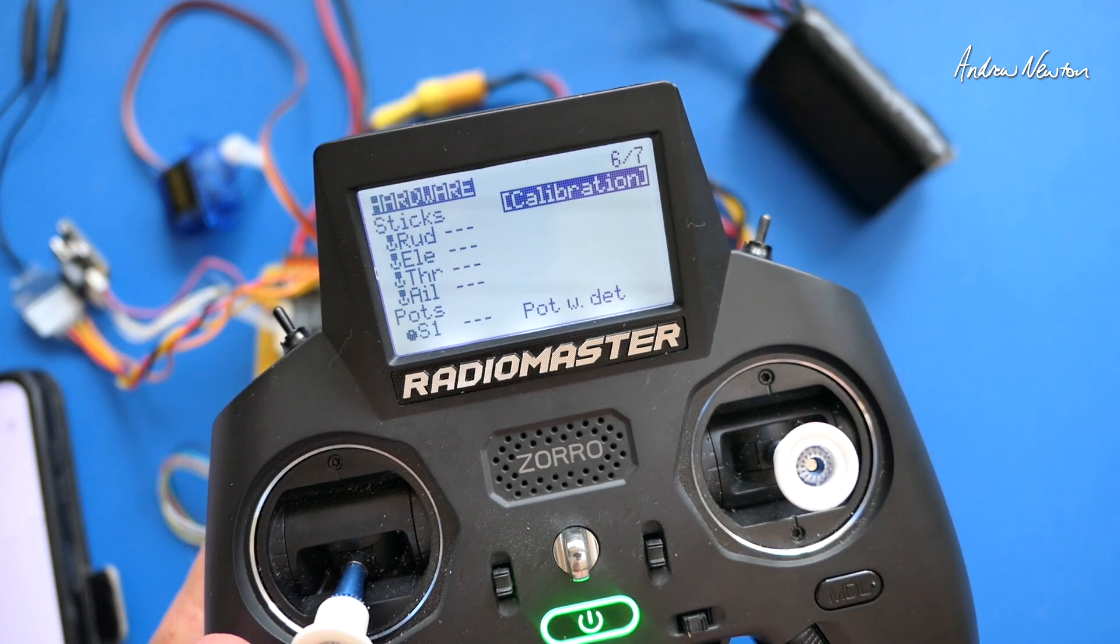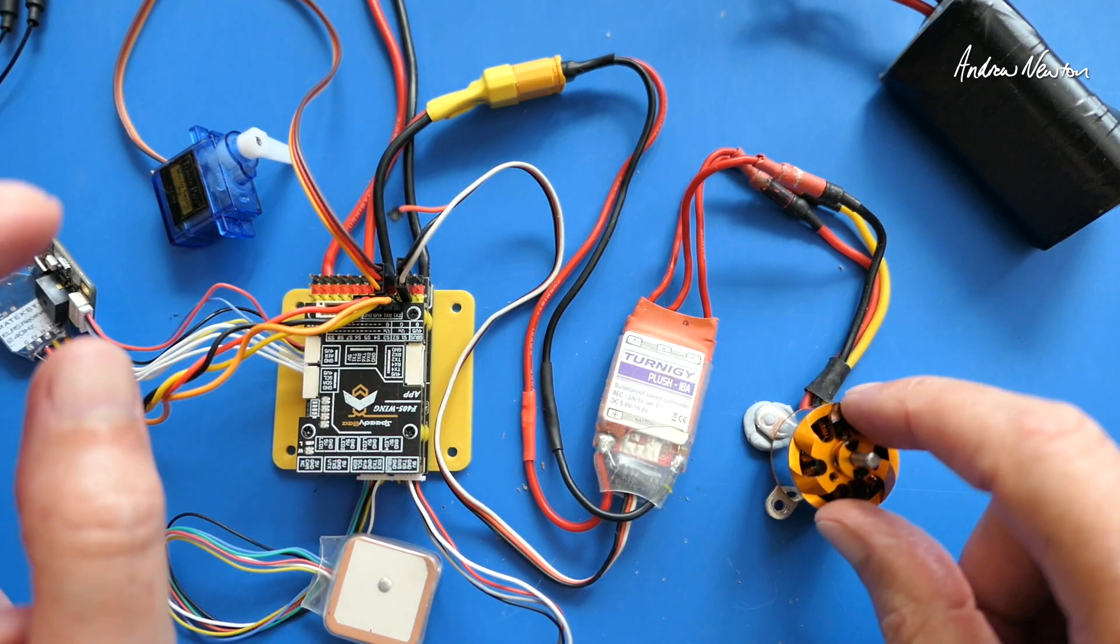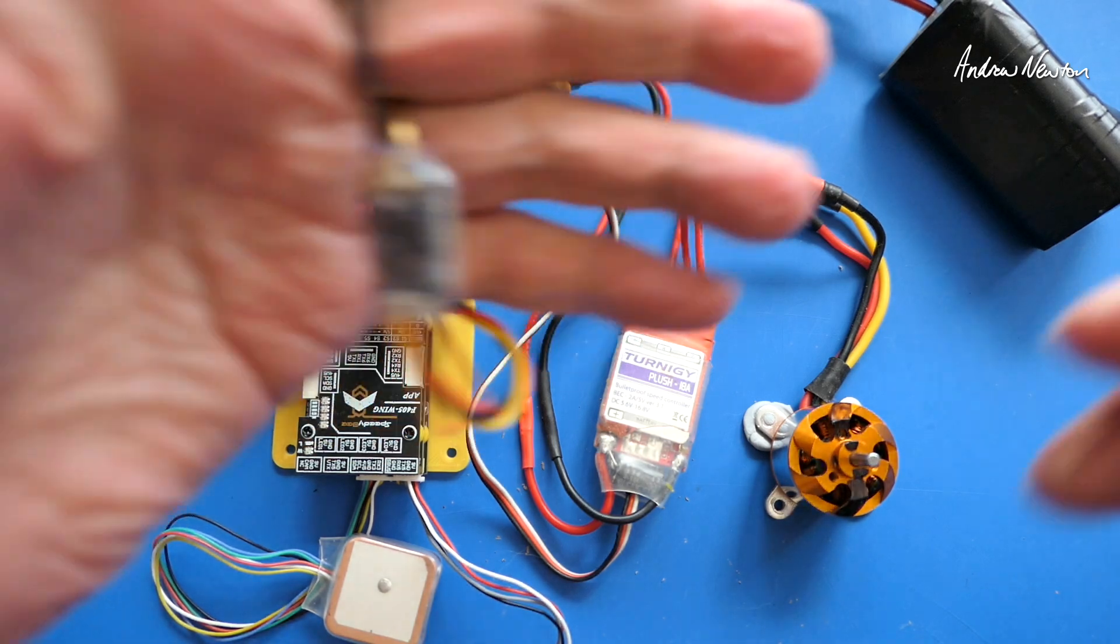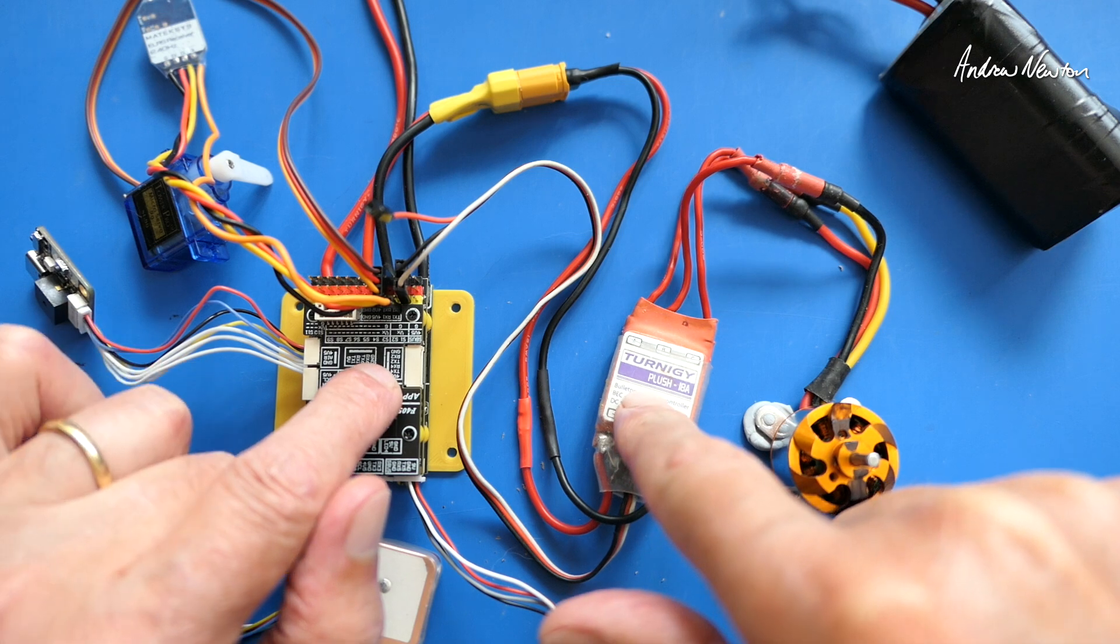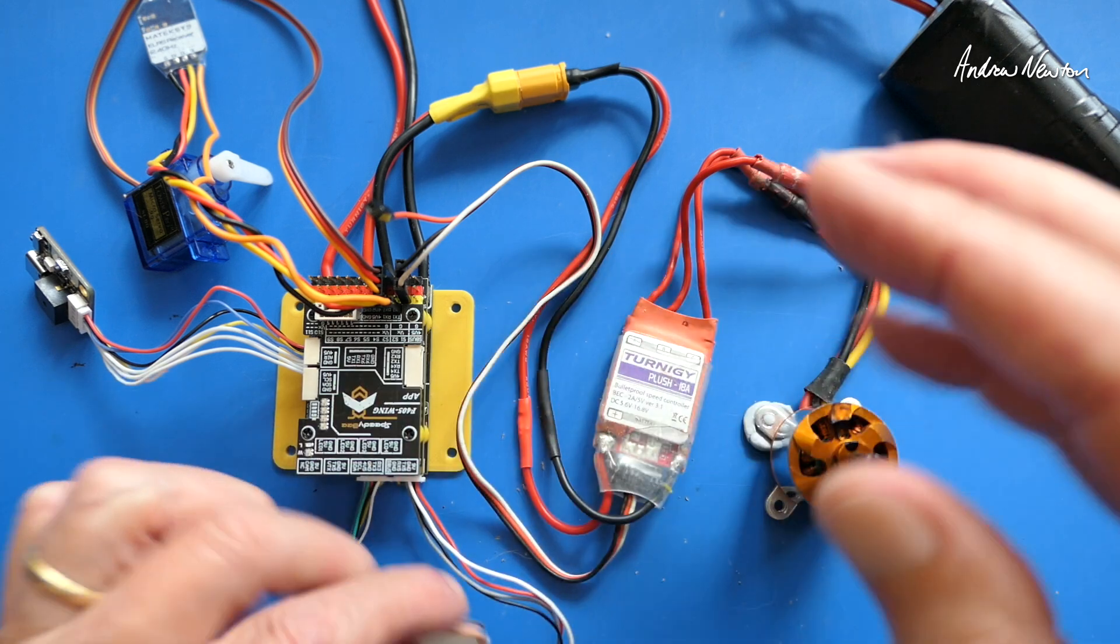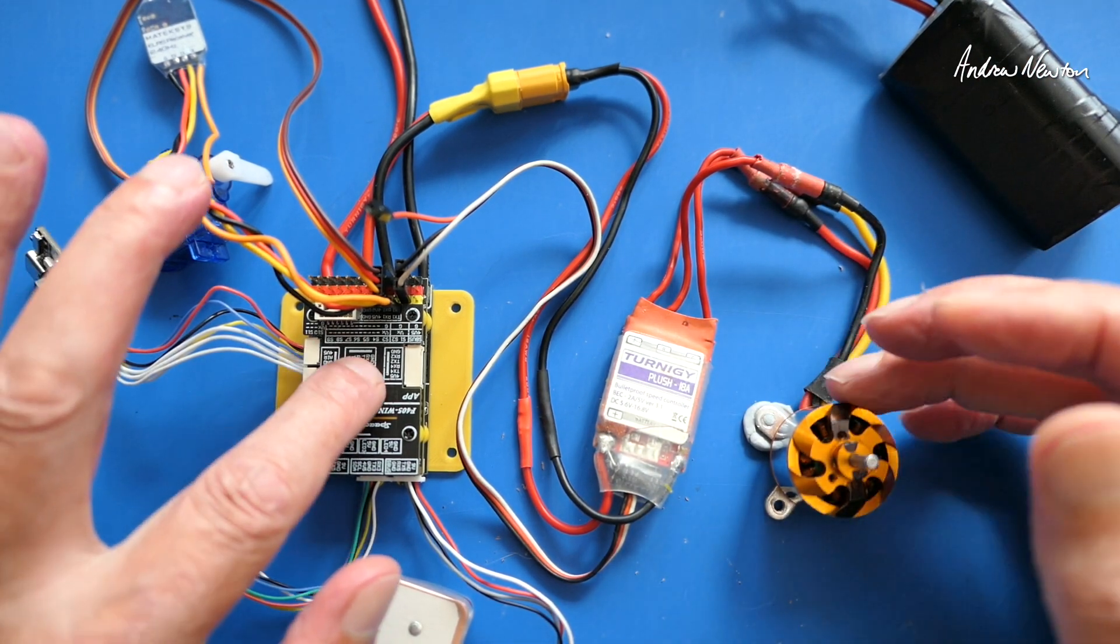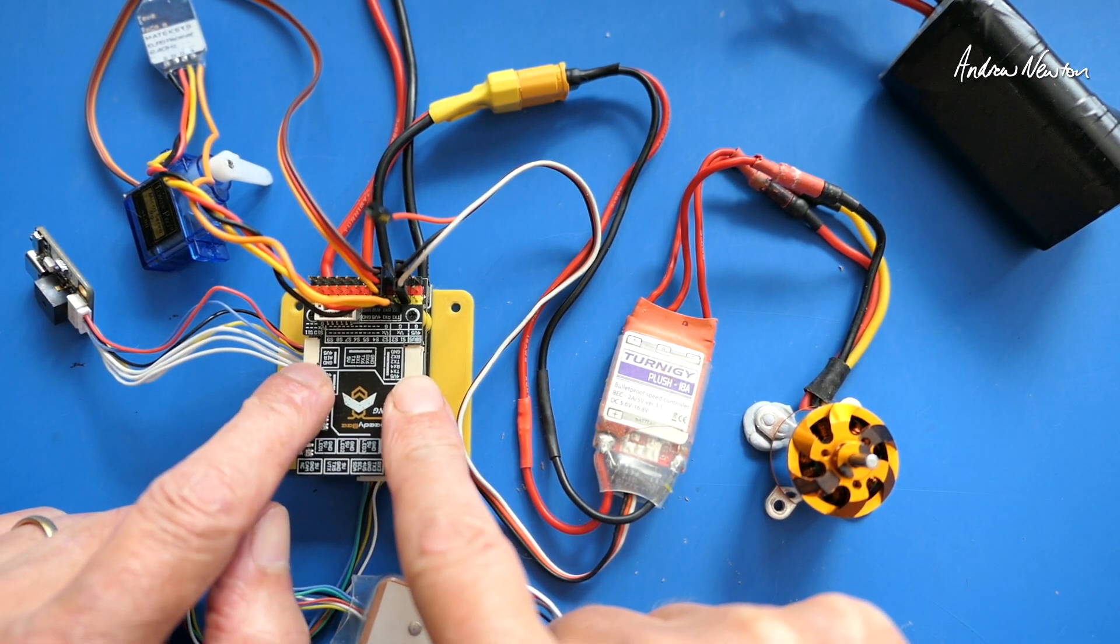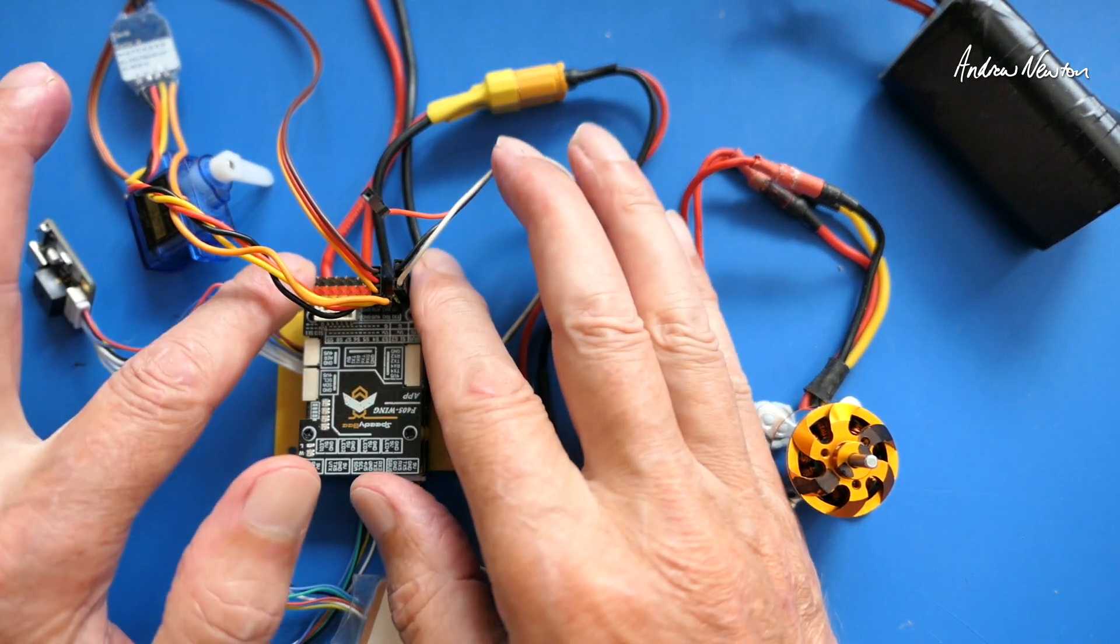So final recap: make sure your ESC and motor actually work by testing them independently. Make sure your radio and receiver are talking to each other. Make sure the board is actually sending a signal to the ESC. Wait for at least six satellites and a 3D lock on your GPS before you can arm. Make sure there are no nav modes selected while you're trying to arm, and make sure you have the correct firmware loaded onto your board. Other than that, it's only going to be damaged components on your board or bad soldering something like that.